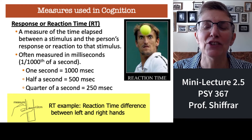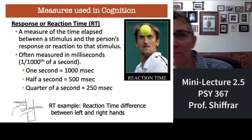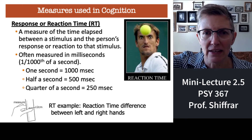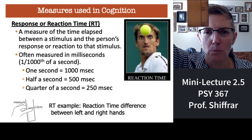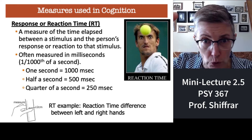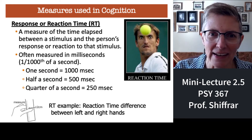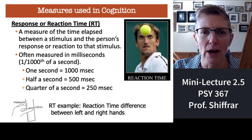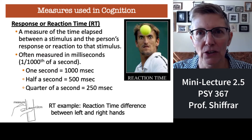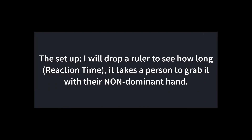We're going to do a quick example. I'll denote time using a measuring stick — I'll hold it up and drop it, and we'll see how long it takes someone to react and grab it. We'll do this with both the right hand and the left hand, measuring how far the ruler drops, which is another way of measuring reaction time.